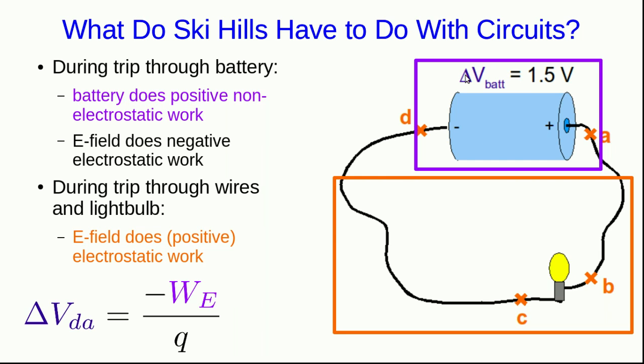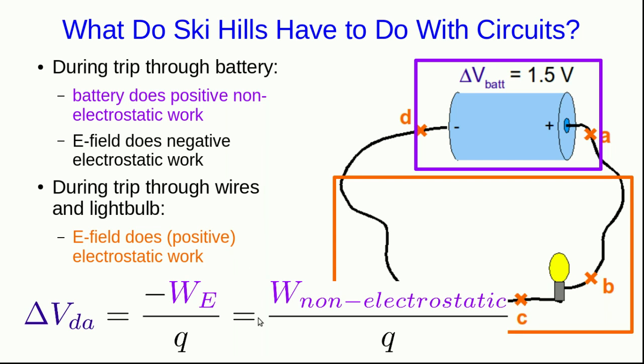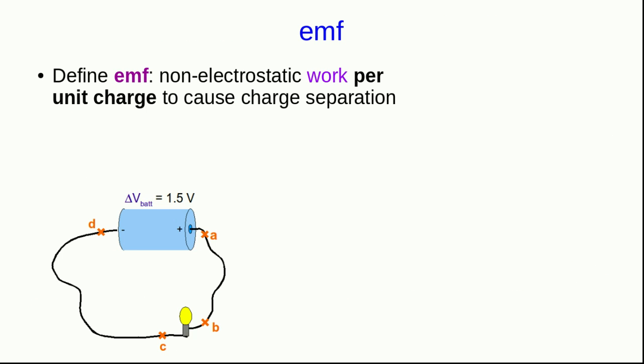Well, if this is an ideal battery and none of the work it's doing is ending up as thermal energy, then the electrostatic work is just the negative of the non-electrostatic work done by the battery. Notice that the work per unit charge done by the battery is not quite the same as a potential difference, because we defined potential difference as the negative of the electrostatic work per unit charge. So we need to give this one another name.